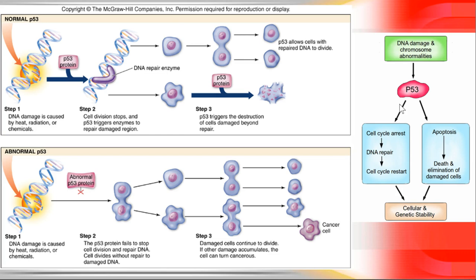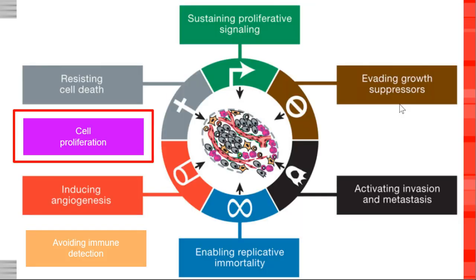P53 is another key gene we're going to talk about. P53 regulates DNA damage. When P53 is activated, cell division stops because there's too much DNA damage, the DNA repair mechanism comes in, and then P53 allows growth to resume if things are okay. If the damage is too great, P53 triggers the destruction of the damaged cell. If P53 is shut off, you get uncontrolled cell growth. So P53 and RB are both tumor suppressors.